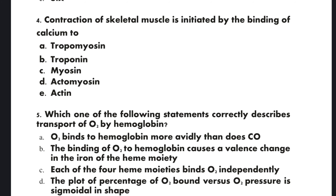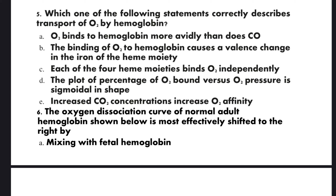Question 5: Which one of the following statements correctly describes transport of O2 by hemoglobin? A: Oxygen binds to heme of hemoglobin more readily than does CO2. B: The binding of oxygen to hemoglobin causes a valence change in the iron of the heme moiety. C: Each of the four heme moieties binds oxygen independently. D: The plot of percentage of O2 bound versus O2 pressure is sigmoid in shape. E: Increased CO2 concentration increases O2 affinity.